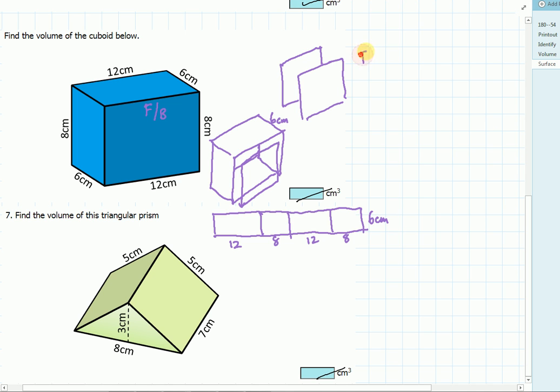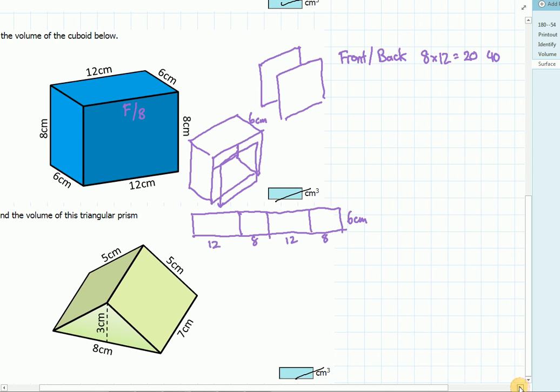So let's do front and back first. So front and back is going to be eight times twelve, which is twenty, and both of them is forty. Eight times twelve is not forty. Eight times twelve is ninety-six. So we get a hundred and ninety-two centimeters squared.